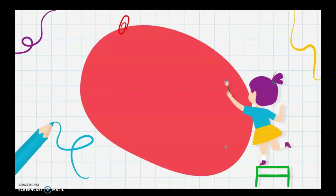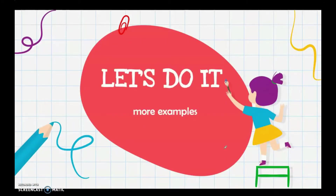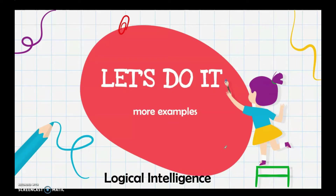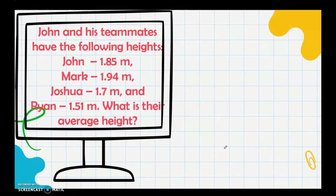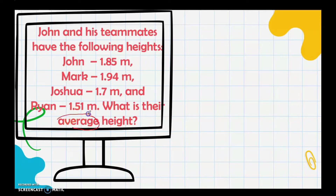Now let's have more examples involving dividing decimals combined with other operations such as addition, subtraction, and multiplication. John and his teammates have the following heights: John is 1.85 m, Mark is 1.94 m, Joshua is 1.7 m, and Ryan is 1.51 m. What is their average height?